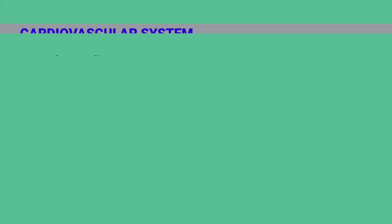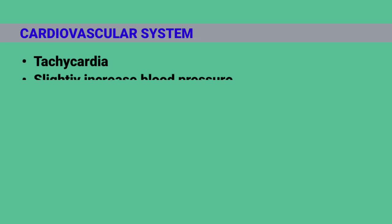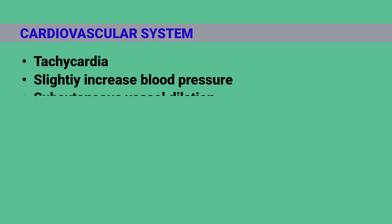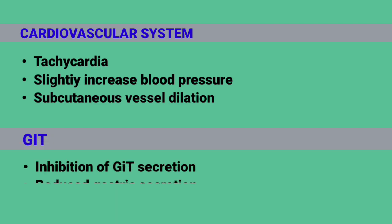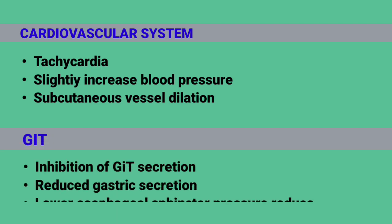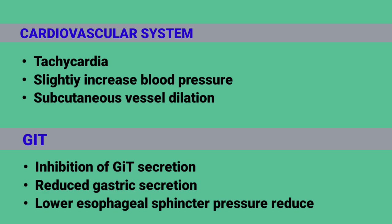Effects on the Cardiovascular System: tachycardia, slightly increased blood pressure, and subcutaneous vessel dilation. Effects on the GIT system: inhibition of GIT secretion, reduced gastric secretion, and reduced lower esophageal sphincter pressure.